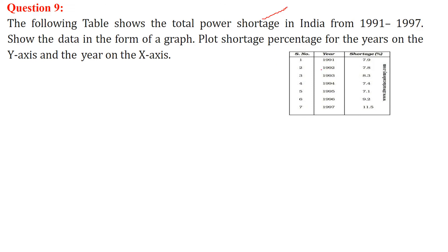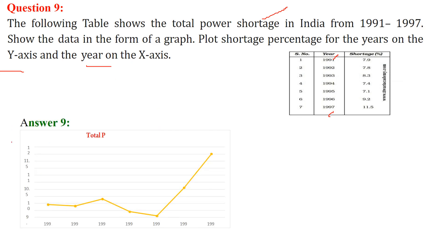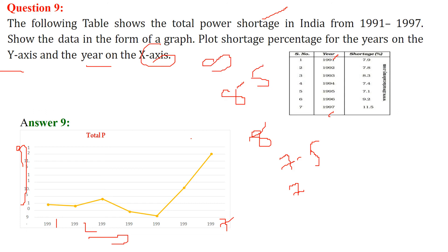There is a table showing the total power shortage in India from 1991 to 1997. We need to show the data in the form of a graph, plotting shortage percentage on the y-axis and the year on the x-axis. The x-axis has years from 1991 to 1997. You can start the y-axis from 7, since the lowest value is 7.1, and go up in increments like 7.5, 8, 8.5, 9, 9.5. Plot the data points accordingly to complete the graph.